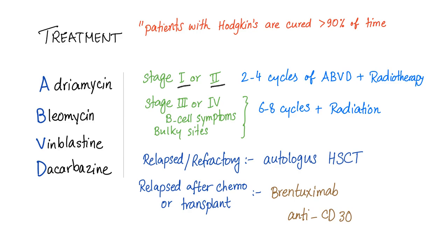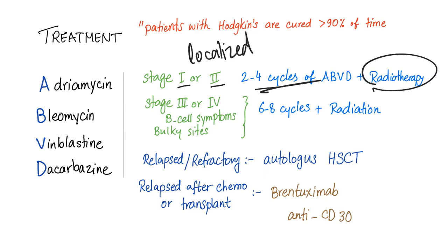For stage 1 or 2, which is localized disease, you can use radiation and also some chemotherapy. The chemo regimen used is called ABVD — adriamycin, bleomycin, vinblastine, and dacarbazine. For stage 3 or 4, which is advanced and more diffuse, you need 6 to 8 cycles of ABVD plus radiation.